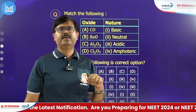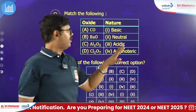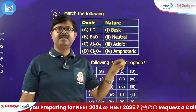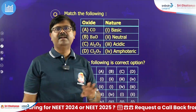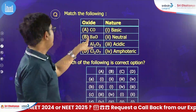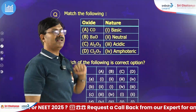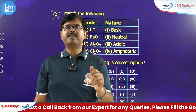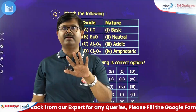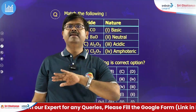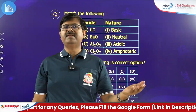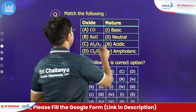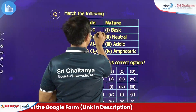Match the following — different oxides are given and their nature is given on the right-hand side. Carbon monoxide: note that carbon dioxide is acidic, whereas carbon monoxide is neutral. It neither reacts with acid nor reacts with base. Therefore it is neutral.